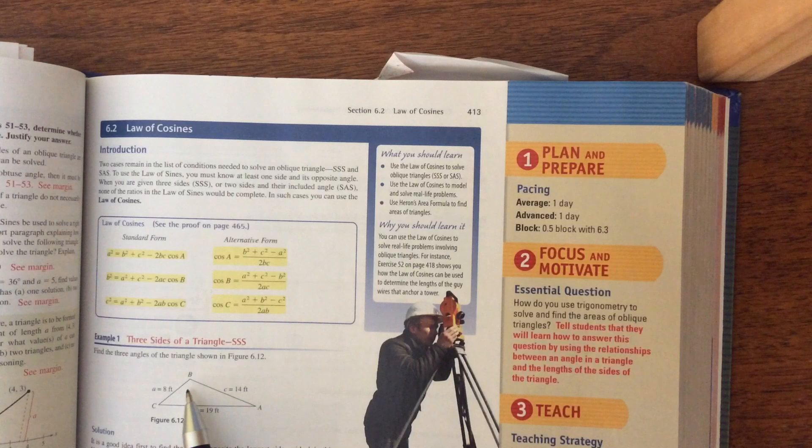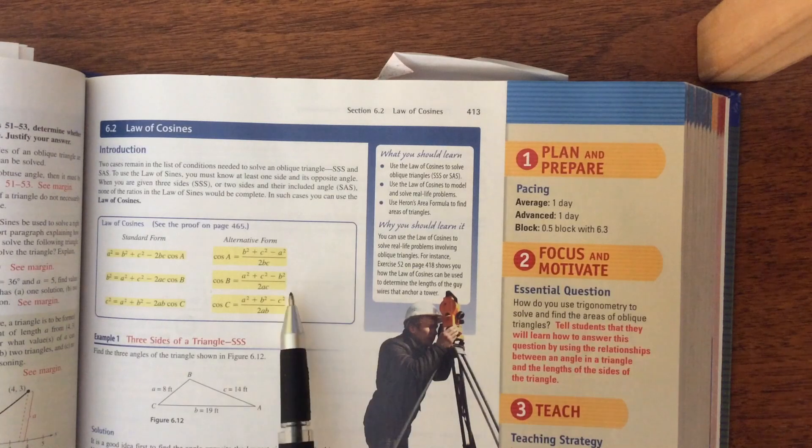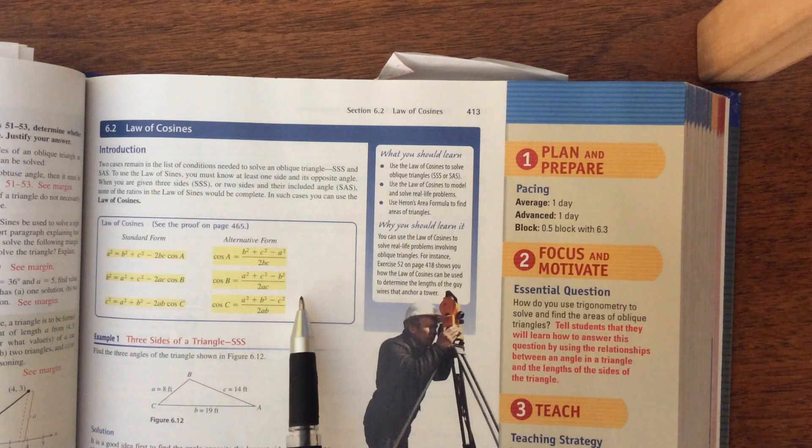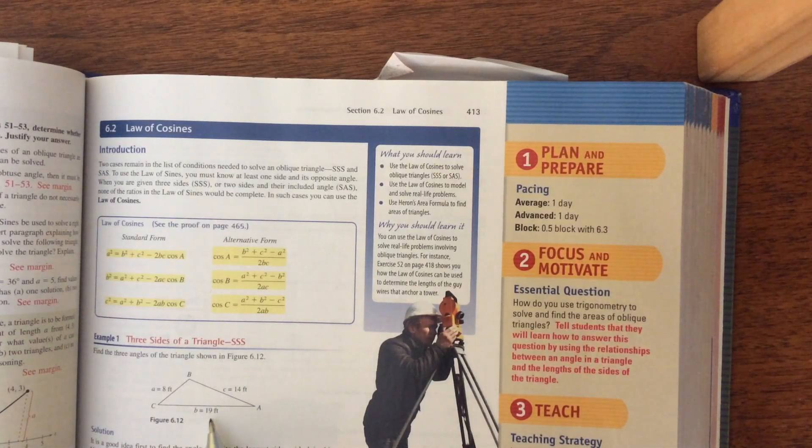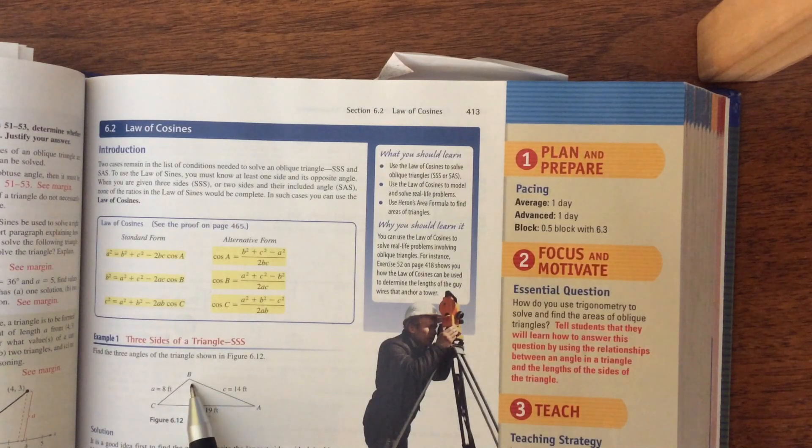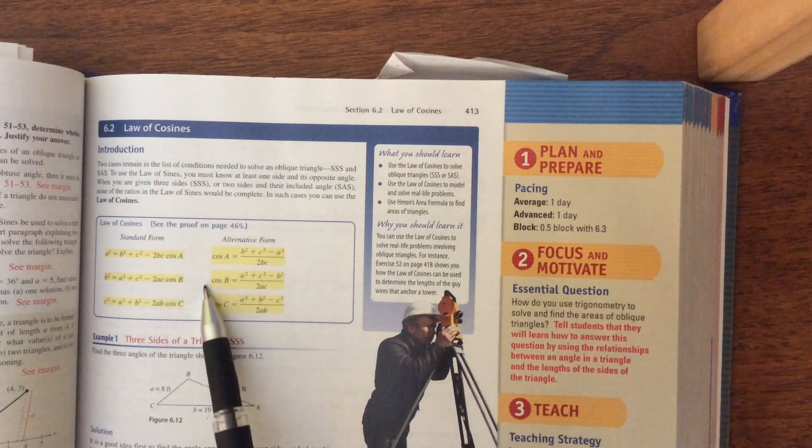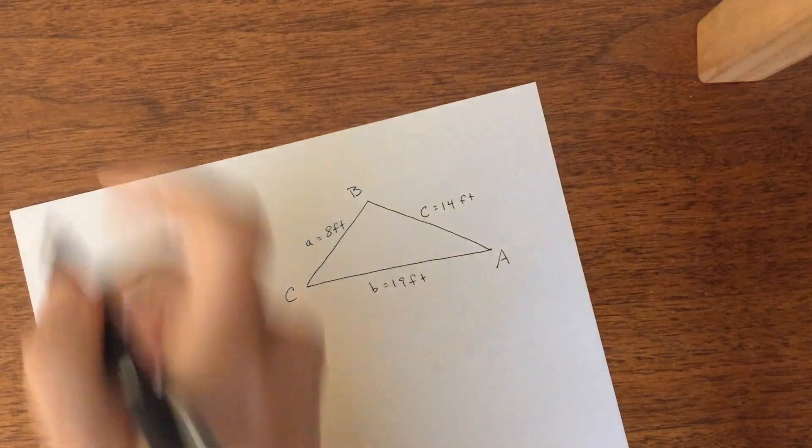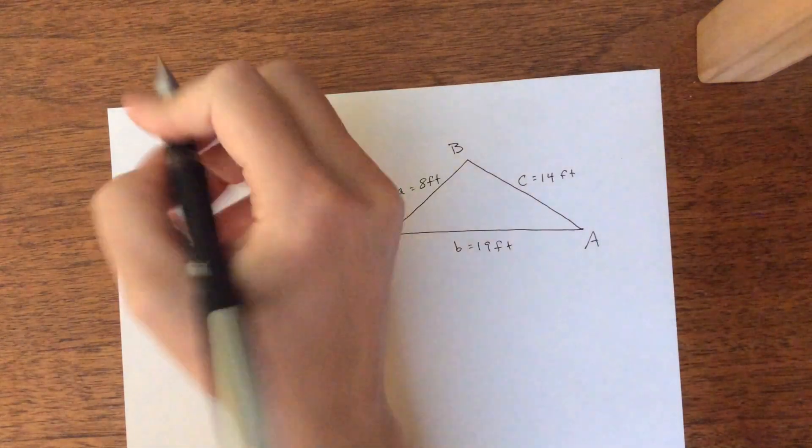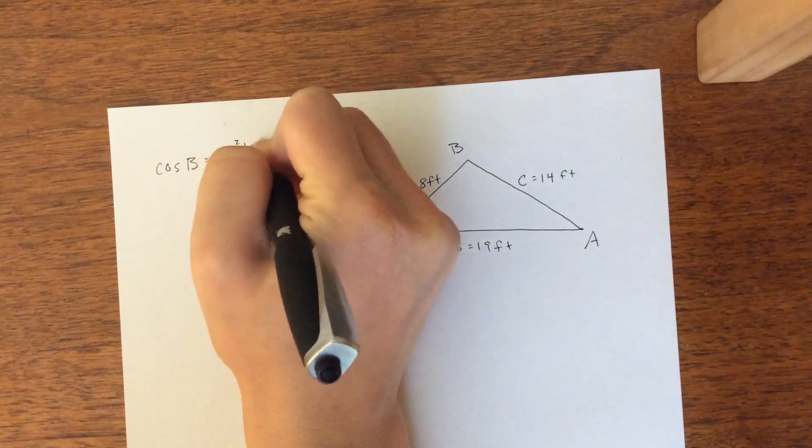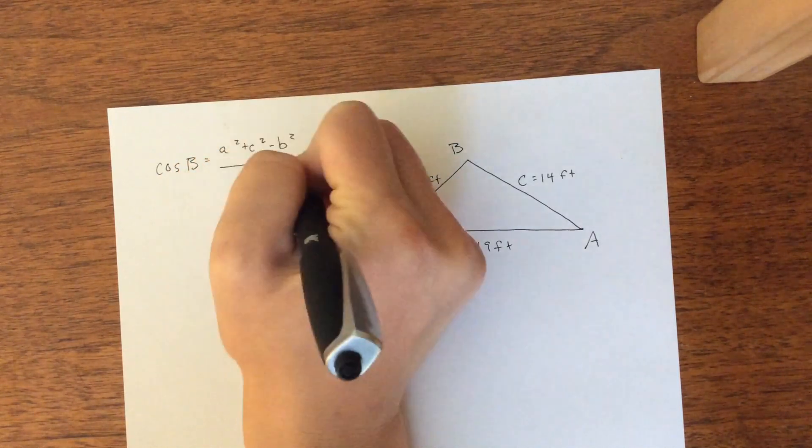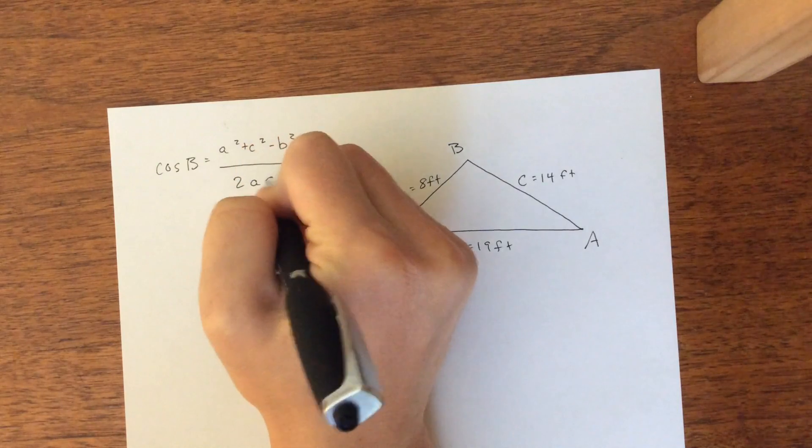So since we are looking for an angle measure, we're going to use the alternative form. And so that's easiest if you start with your biggest angle, which is opposite your largest side. So if our largest side is 19, we're going to use angle B. So this is the formula we're going to be working with.